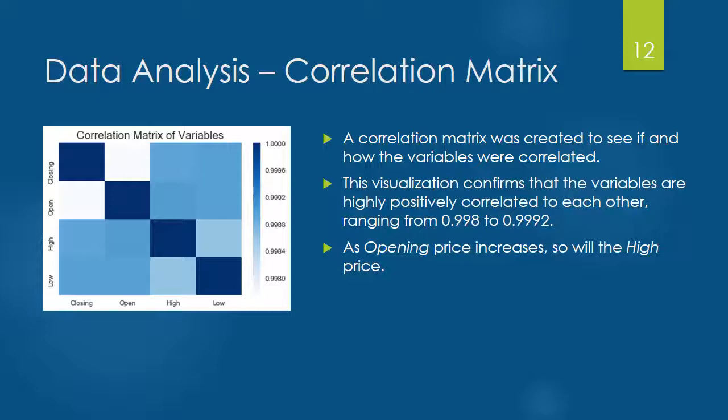Variables that are positively correlated change in the same direction. All the features range from 0.998 to 0.9992, which means they are extremely positively correlated to each other. For example, when the opening price increases, so will the high price.